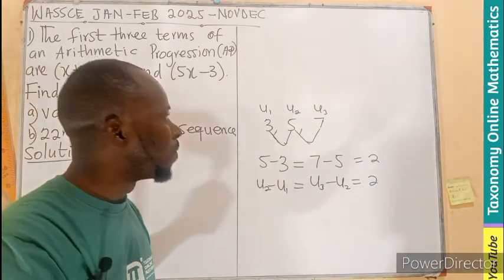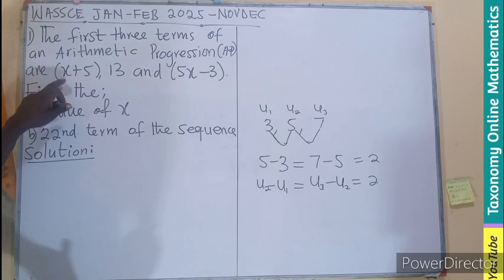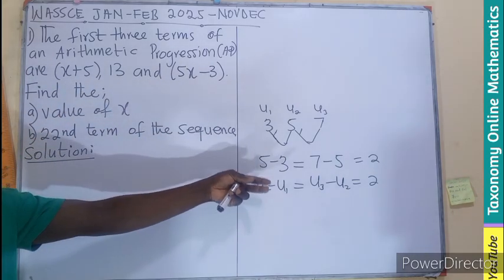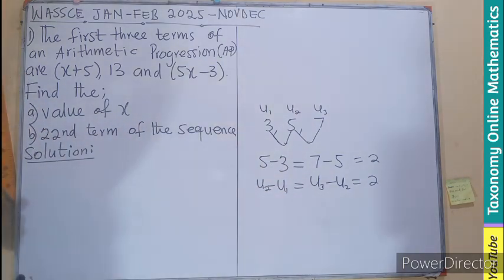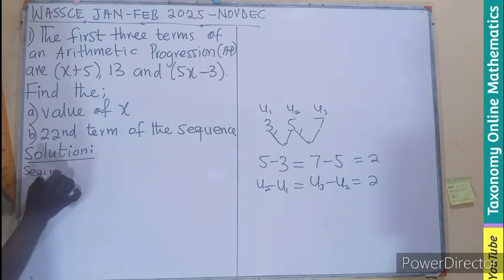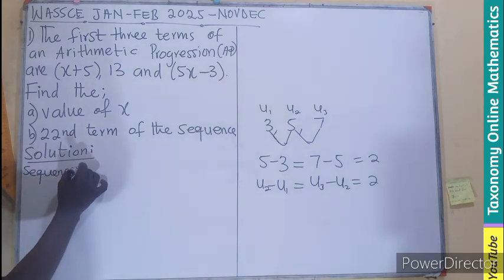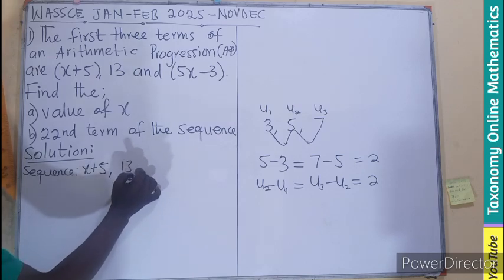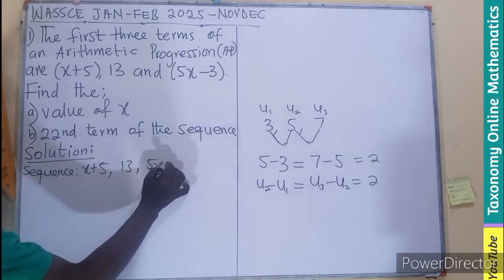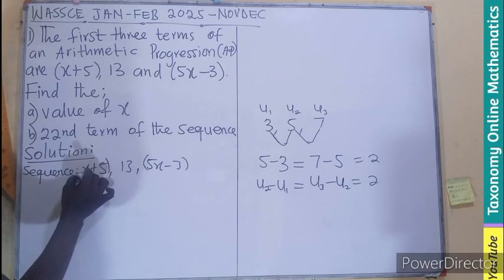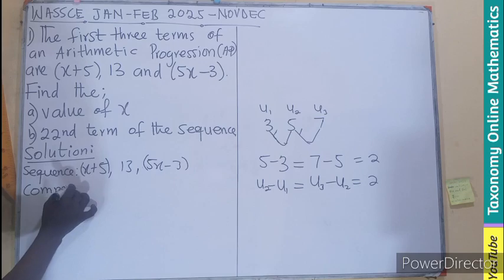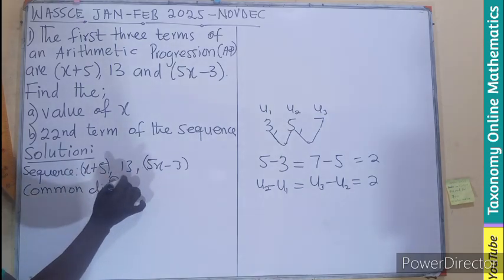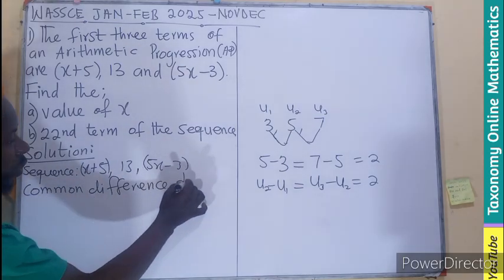As you progress on, you find the common term. So this simply means that if this is the first term, second term, and the third term, same analogy can be derived to find the common difference. So here, we can say that the sequence is given as x plus 5, 13, then 5x minus 3.